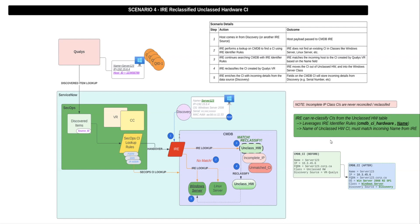In step four, IRE reclassifies the CI that was originally brought in by the scanner and moves the CI out of unclassed hardware and into the Windows Server class. This is done through the IRE identifier rules, where the name of the unclassed hardware CI matched the incoming name from IRE. In step five, IRE enriches the CI with incoming details from the discovery data source. The OS is now populated and the class has changed from unclassed hardware to Windows Server. The discovery source has also changed from VR-Qualys to discovery.